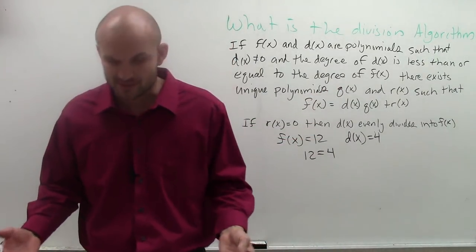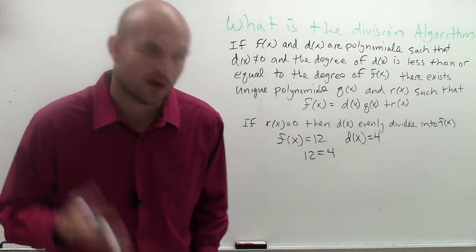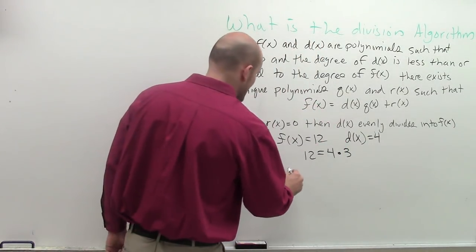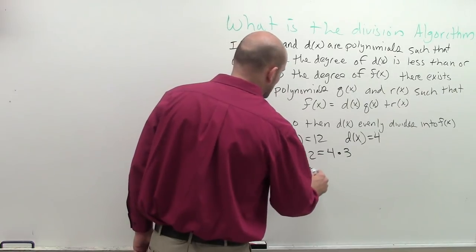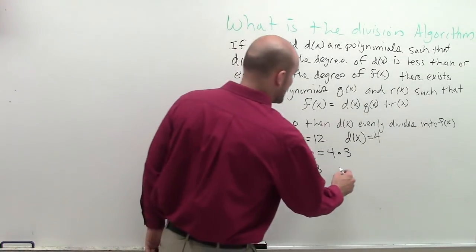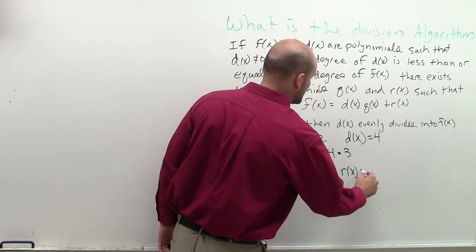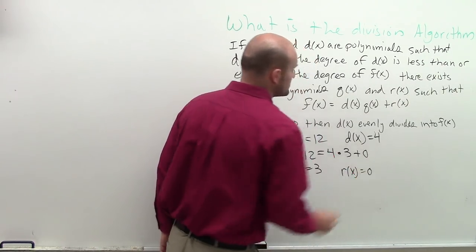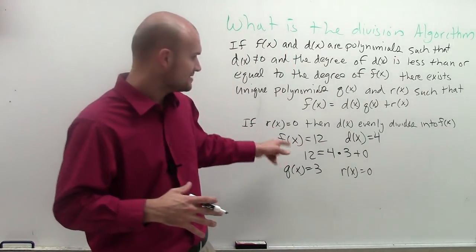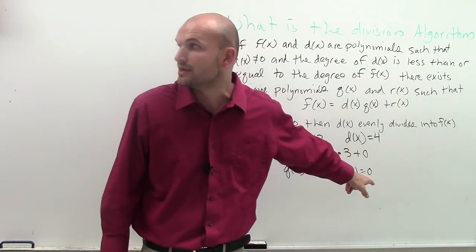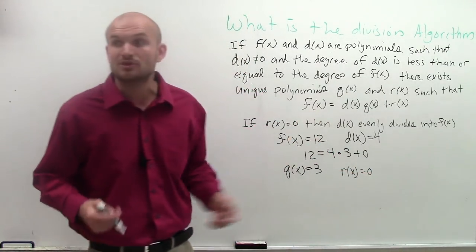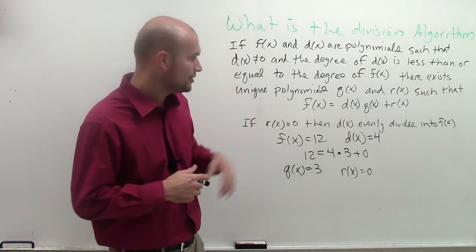So you can think about this and say: what is 4 times what equals 12? And we know the answer is going to be 3. So we could say that q of x equals 3. And in this problem, we could say that r of x, which is going to be your remainder, is going to equal 0. So since we know that r of x is equal to 0, then we know that d of x is going to evenly divide into our polynomial.